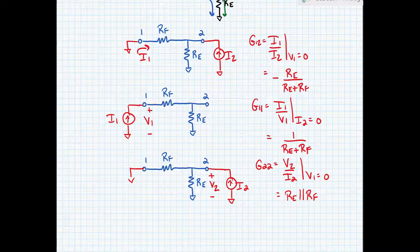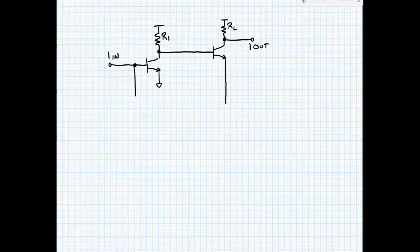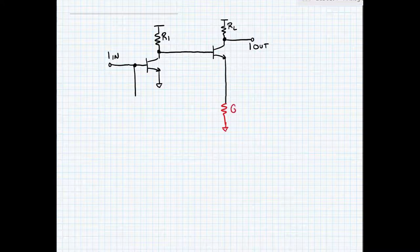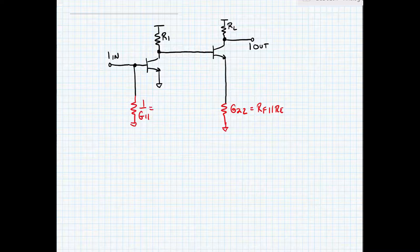Now let's redraw our open loop circuit. Here's our open loop circuit. We're going to break the loop and replace it with our loading. G22 is placed at the output — this is equal to R_F in parallel with R_E. And 1 divided by G11 is placed at the input — this was equal to R_F plus R_E.